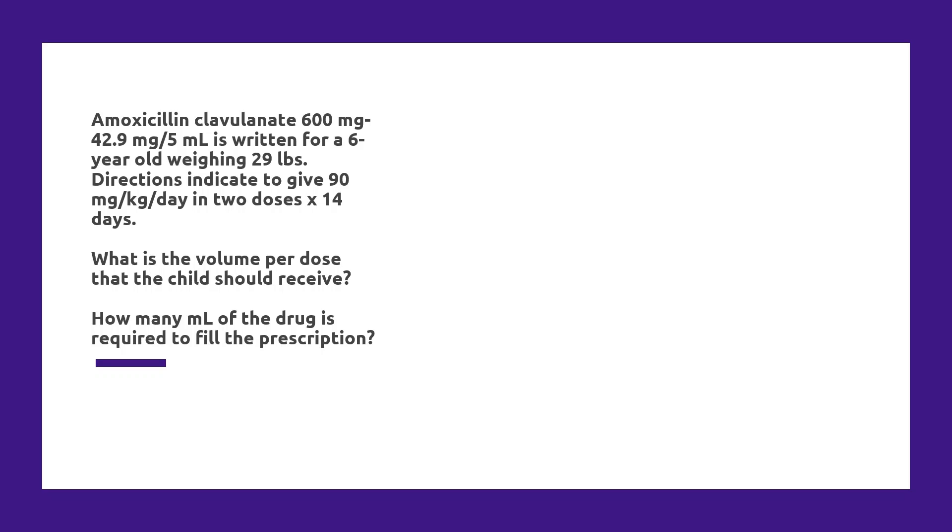I want to note a couple of things before we really get started here. Amoxicillin clavulanate is actually two separate medications combined into the same product. Amoxicillin is an antibiotic. Clavulanate is a medication that inhibits an enzyme that some bacteria produce to inactivate that antibiotic. So when you see the strength expressed as 600 mg-42.9, that's how many mg of amoxicillin and how many mg of clavulanate there are respectively per 5 mLs of this suspension.